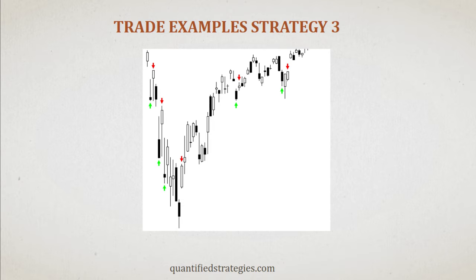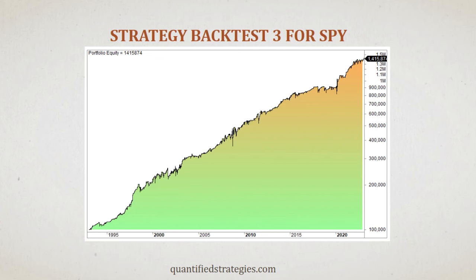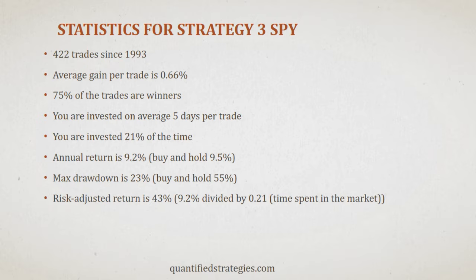Looking at the equity curve of this strategy, it's hard not to be impressed by such a simple approach. Starting with $100,000 in 1993, you end up with $1.4 million today, despite being invested just 21% of the time. The trading performance equals buy and hold, while taking advantage of the ebb and flow in the market for a risk-adjusted return of 43%. Simplicity trumps complexity.